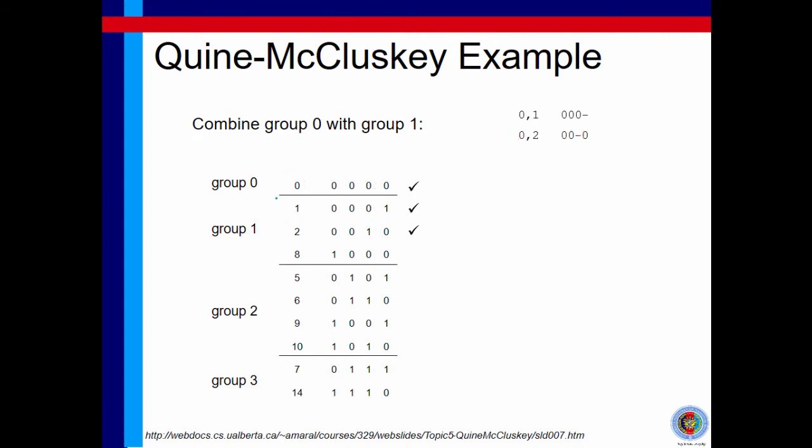The next combination is obviously, we are going to combine or compare minterms 0 with minterms 8. Obviously, there is also exactly one variable change, which in this case is variable a. So, we will tick minterms 8 and combine the two to become a 2 minterms implicant that loses variable a, because variable a changed from 0 to 1.